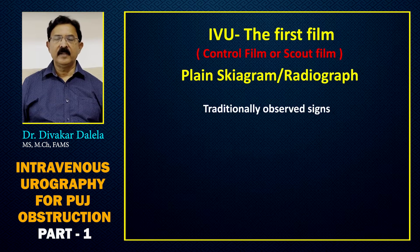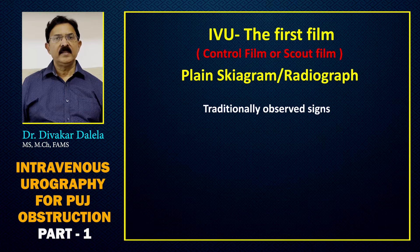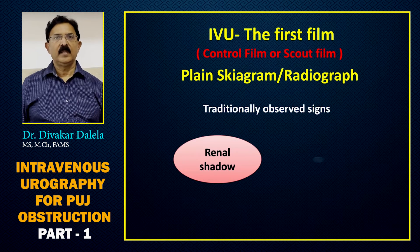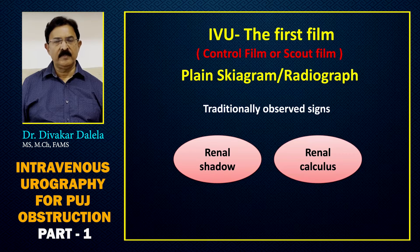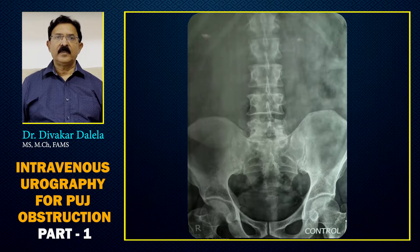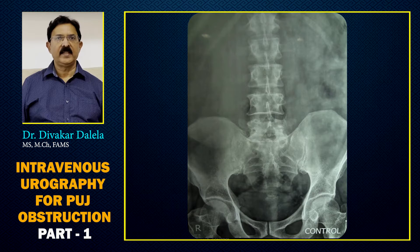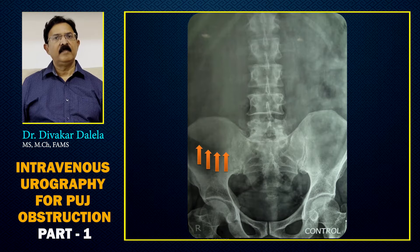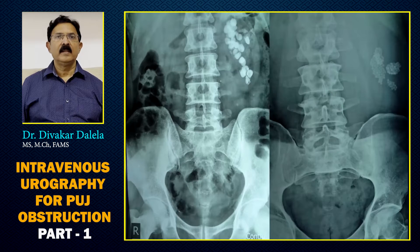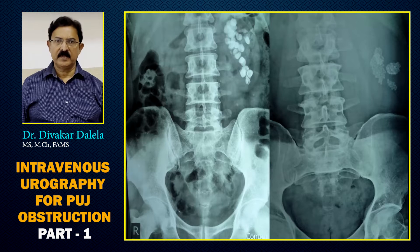In intravenous urography, the first film is a control film which is a plain radiograph. Traditionally we expect you to look at the renal shadow and also look for radiopaque shadows. For the renal shadow, you will only see the lower convex margin of the kidney — the top pole is hidden by the liver on the right side and by the spleen on the left side, so it's not properly visible.